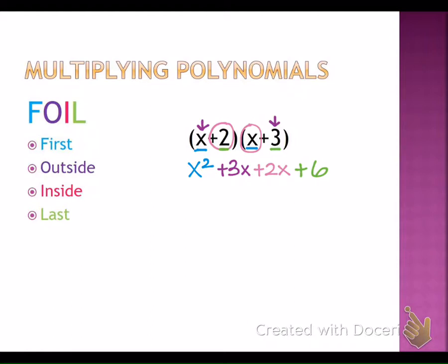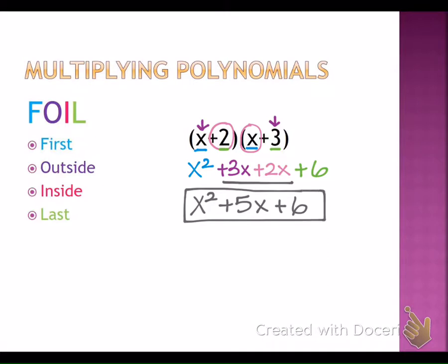If I have FOILed correctly, the middle two terms should be like terms. So I have to combine my like terms — in order to put my final answer in standard form, like we learned to do yesterday, I've got to combine all my like terms. The 3x and 2x are like terms. When we multiply two binomials, our outcome or answer is a trinomial. So if you see instructions to multiply the binomials and write them as a trinomial, that's what they're asking you to do. FOIL will take your binomials and give you a result that is a trinomial.